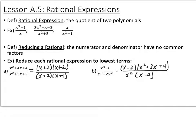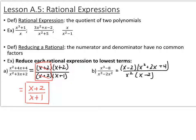For this first example, we have x plus 2 times x plus 2 over x plus 2 times x plus 1. You can see that we have an x plus 2 in both the numerator and the denominator. Just like when we're doing fractions with numbers, x plus 2 divided by x plus 2 is 1, so we can cancel those off. This is equal to, in reduced form, x plus 2 over x plus 1. So this is the most reduced form of this original rational expression.